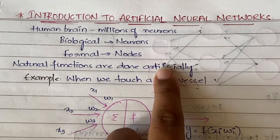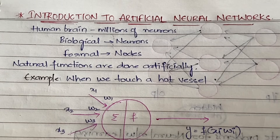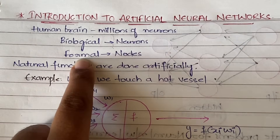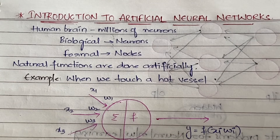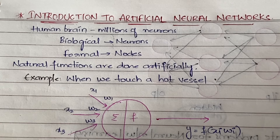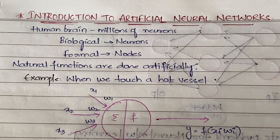The natural tasks performed by our brain are done artificially, and that is called artificial neural networks. What are those artificial neurons? They are nothing but nodes. In biological terms we have neurons; in formal terms we have nodes. In artificial terms, the neuron is called a node.